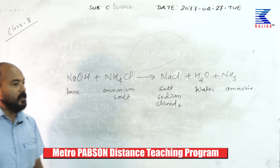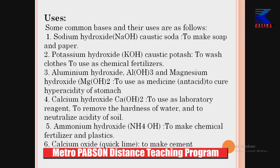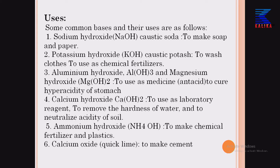These are the properties of bases. Now the uses of bases: sodium hydroxide is also known as caustic soda (NaOH) — remember this common name. Sodium hydroxide is widely used for making soap and paper. Similarly, potassium hydroxide is also known as caustic potash (KOH) and is used to wash clothes and to manufacture chemical fertilizers.